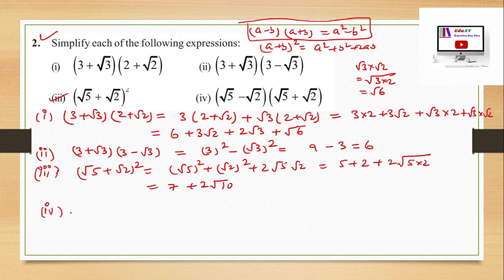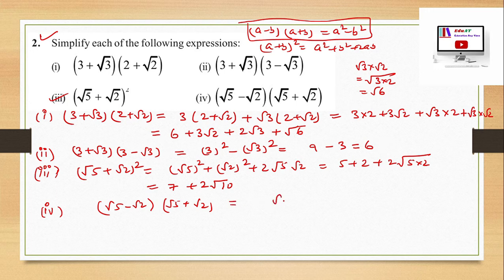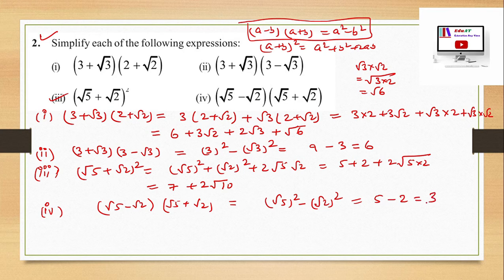Fourth part: (√5 − √2)(√5 + √2). This is in the form (a − b)(a + b) = a² − b². So it is (√5)² − (√2)² = 5 − 2 = 3. The answer is 3.